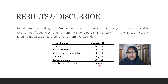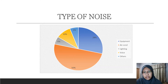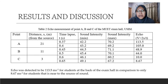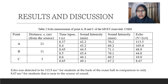We have given the sound slightly lower than recommended. A survey was conducted previously, and these are the categories of noise described by our students two years ago. This is the main result of the study: echo was detected at 113.5 metres per second for students at the back of the exam hall, compared to only 8.67 metres per second for students near the source.